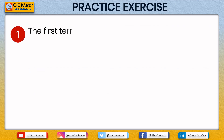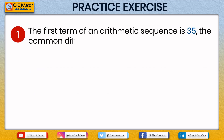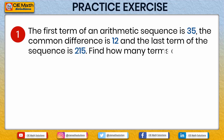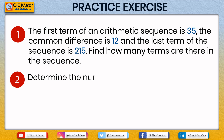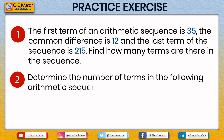Now it's your turn. First: the first term of an arithmetic sequence is 35, the common difference is 12, and the last term is 215 — find how many terms are in the sequence. Second: determine the number of terms in the sequence negative 5, 12, 29, 46, … 182. Please pause the video to try these, then press play to check your answers.